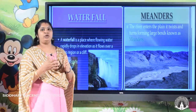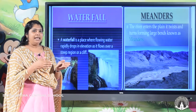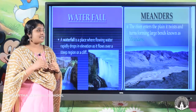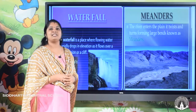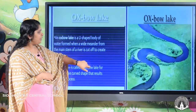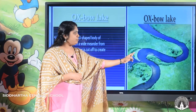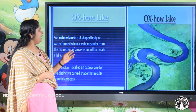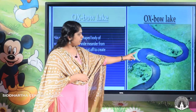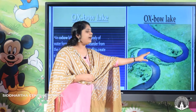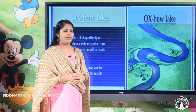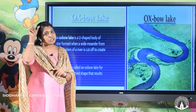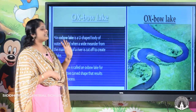Coming to meanders: when the river enters the plain area in the middle course, it twists and turns, forming large bends known as meanders. In this picture, you can see those large or deep bends made by the river. These bends are called meanders. Meanwhile, a U-shaped body of water is cut off from the main stream of the river, and that type of lake is called an oxbow lake because of its oxbow-like shape.